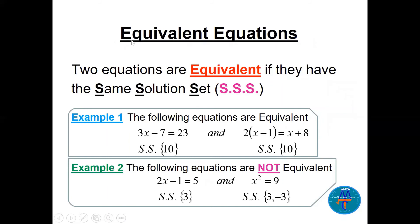Now let's go to some definition. What is equivalent equations? Equivalent. Simple answer here. Two equations are called equivalent if they have the same solution set. SS, same solution set. So if you have an equation like this, 3x minus 7 equals 23, solution will be 10. If we have this equation, 2 times x minus 1 equals x plus 8, if you find x, x will be 10. Same, right? So these are called equivalent.